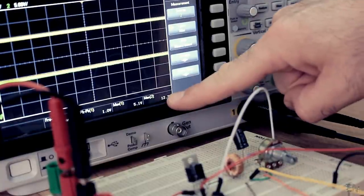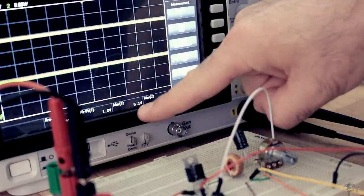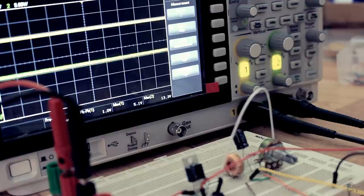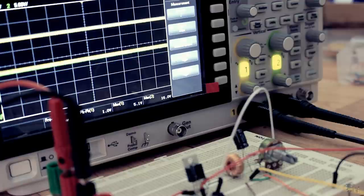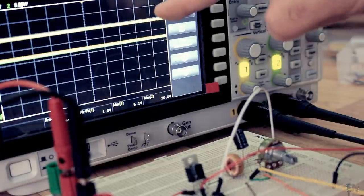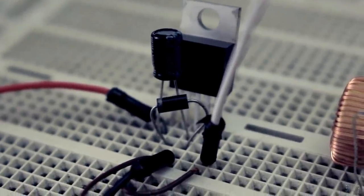Now here on my oscilloscope I have the input voltage with the green line and the output with the yellow line. The input is set to 12V and the output to 5. Now I change the input value but as you can see, the output stays the same. The circuit works. I've got myself a buck converter.